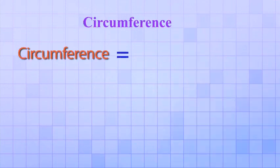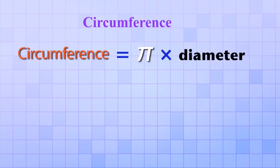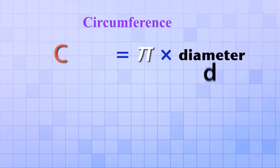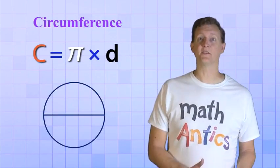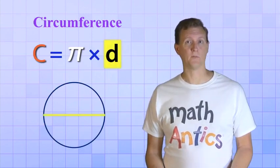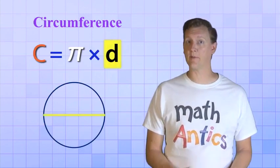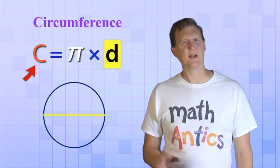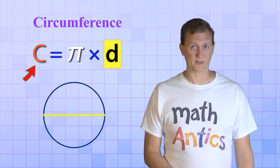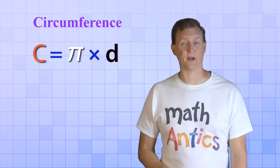The formula for finding the circumference is circumference equals Pi times diameter. And just like most formulas, we use abbreviations. C for circumference and D for diameter. So that's a pretty simple formula. It tells us that if we know the diameter of a circle, all we have to do is multiply that diameter times the number Pi, and we'll get the circumference. And we'll try that formula out in a few minutes. But first, let's see the formula for area.